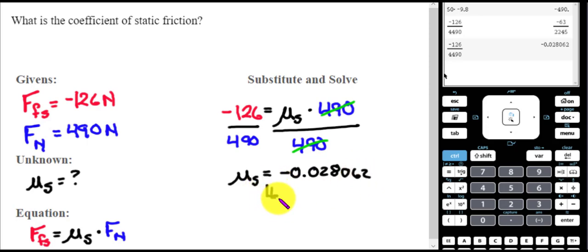But I know that coefficients of friction, mu's, need to be absolute, so 0.028062. And then if we make it pretty, like money, I'm going to go 0.03.